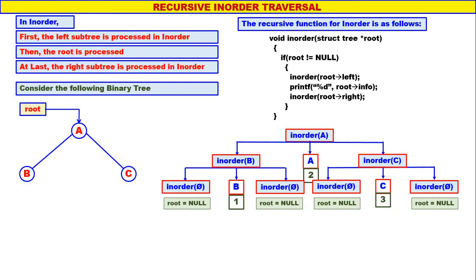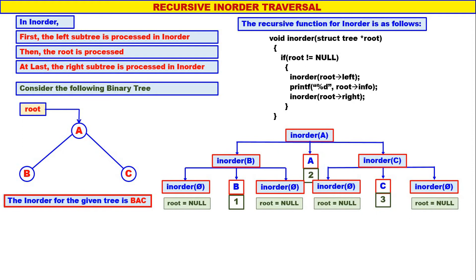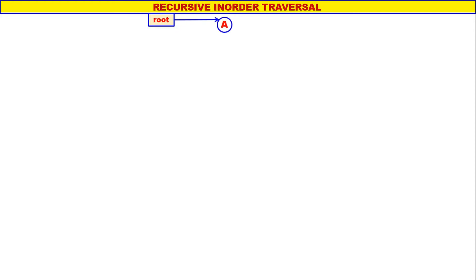Now you can see the first one to be displayed was B, second one was A, and third one was C. Therefore the inorder traversal for the given tree is B, A, C. The recursive inorder is quite simple.